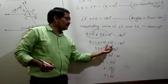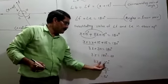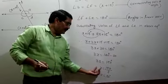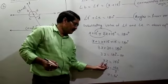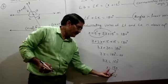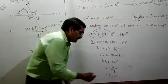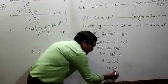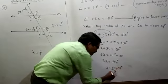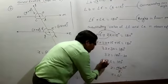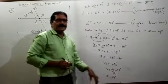Transposing plus 30 to the other side, it becomes minus 30. So 3x equals 150 degrees. To find x, transpose the multiplied by 3, which becomes divided by 3. Therefore, x equals 150 divided by 3, which gives us the value of x as 15 degrees.